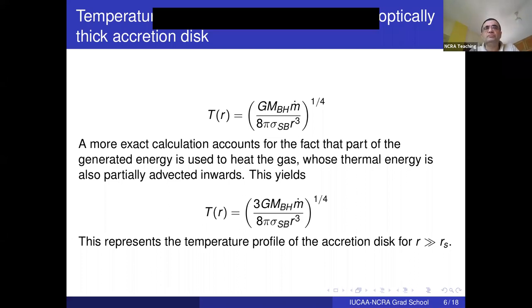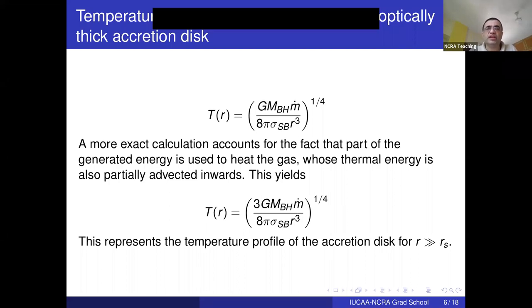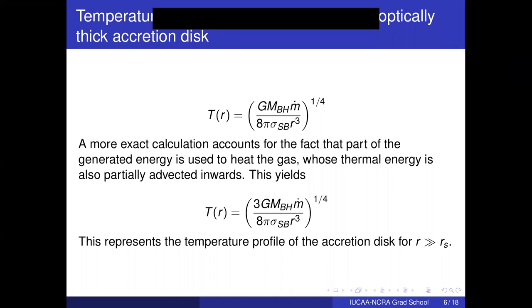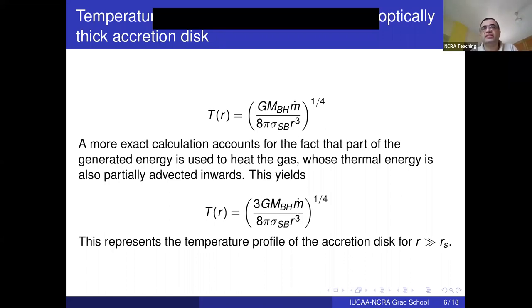Suppose you have a Schwarzschild non-rotating black hole with an accretion disk. Orbits very close to the Schwarzschild radius won't be stable — once you come within 3 Schwarzschild radii, the orbits become unstable. For a rotating (Kerr) black hole, there are two scenarios: if it rotates in the same direction as the accreting gas, the stable orbits extend further inward.